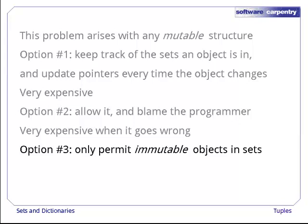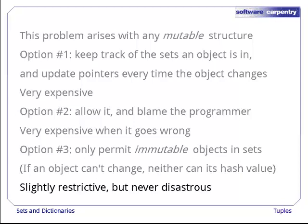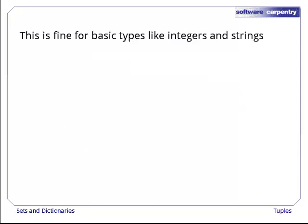Python uses a third option: it only allows programmers to put immutable values in sets. After all, if something's value can't change, neither can its hash code or its location in a hash table. In practice, this turns out to be a fairly minor restriction. It's occasionally annoying, but never a showstopper.